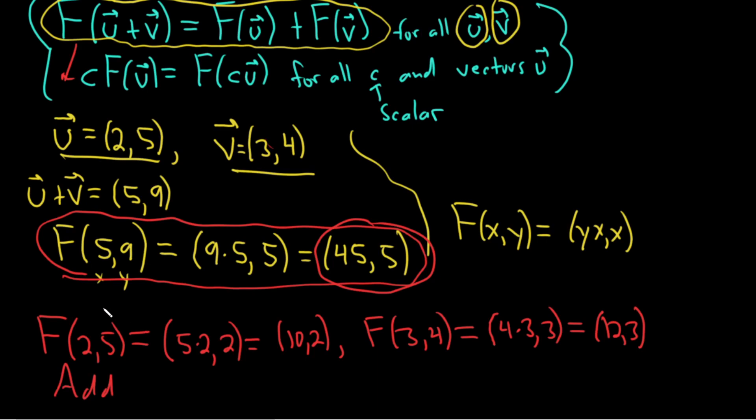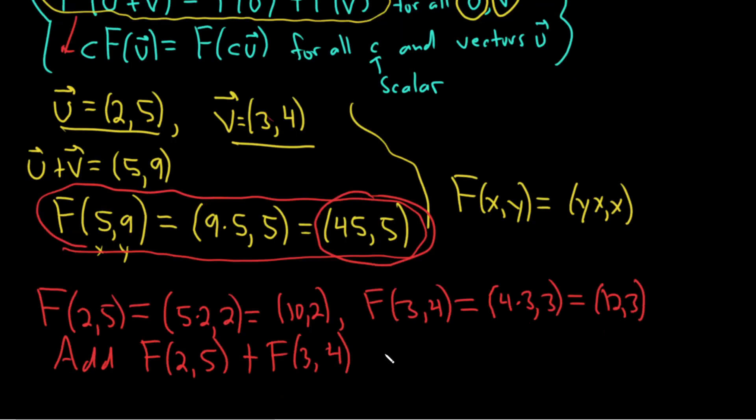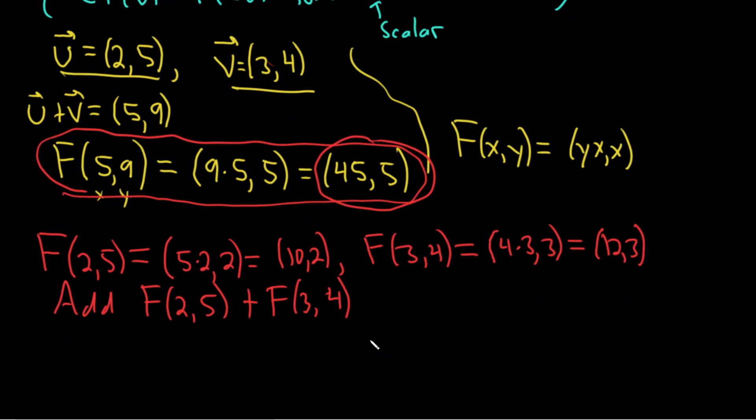I'll go ahead and write it one more time just for clarity. So F of 2, 5, plus F of 3, 4. And again, this is supposed to be linear. So, I mean, if it was linear, you would just add them up. You would do 2 plus 3, which is 5, 5 plus 4, which is 9. But we're trying to show it's not linear.